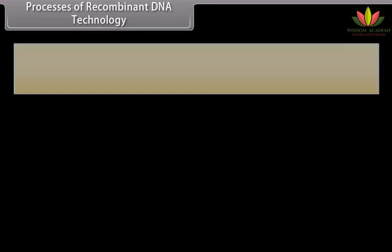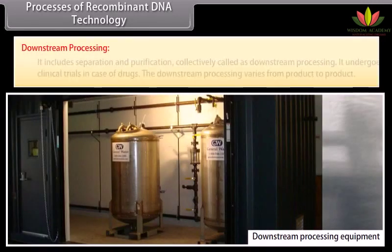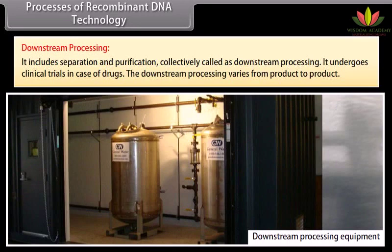Processes of recombinant DNA technology — downstream processing. It includes separation and purification, collectively called downstream processing. It undergoes clinical trials in the case of drugs. The downstream processing varies from product to product.